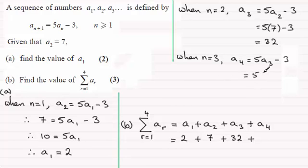So you've got 5 times a3, which is 32, and then minus 3. Work that out and you end up with 157. So just have to add that fourth term in, 157.